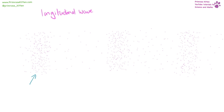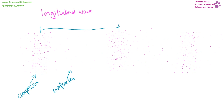Here we have our longitudinal wave, where we have areas of compression and areas of rarefaction. We can measure the wavelength from one point to another point. The direction of movement is side to side.